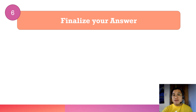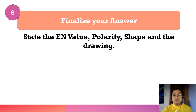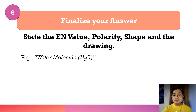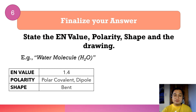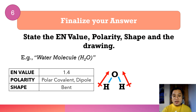Step six is to finalize your answer: state the EN value, the polarity, the shape, and the drawing of the molecule. For the water molecule H₂O: the EN value is 1.4, the polarity is polar covalent and a dipole, and the shape is bent. Don't forget to include the drawing of the molecule. Since this is a polar covalent bonding, also include the arrow symbol representing the positive and negative poles.